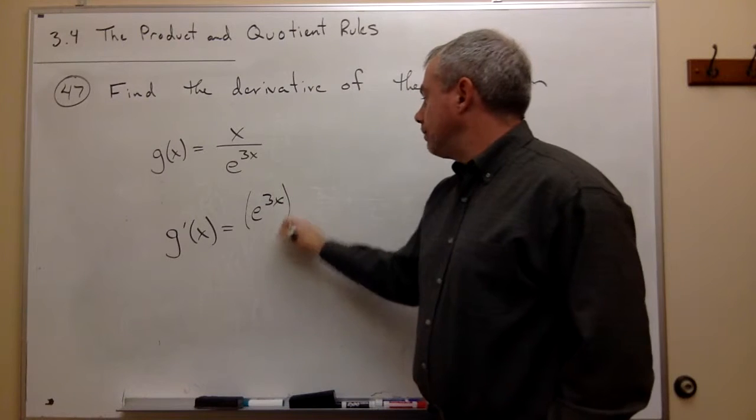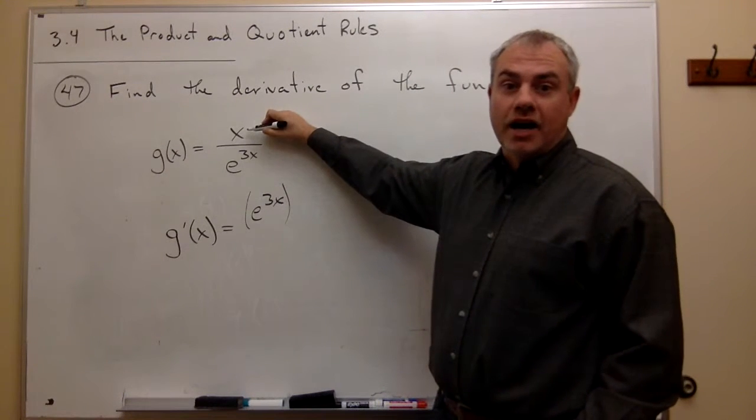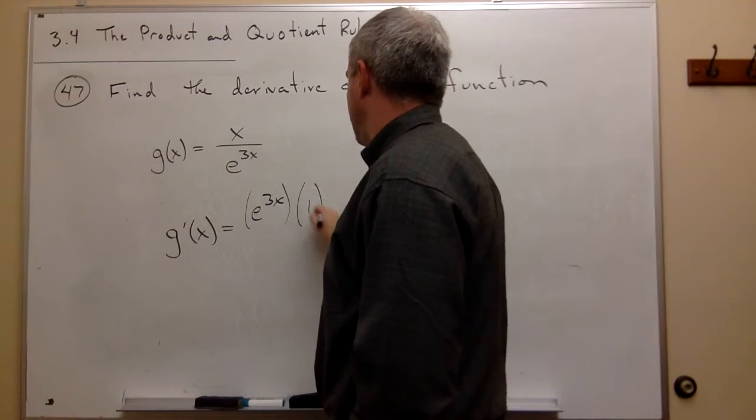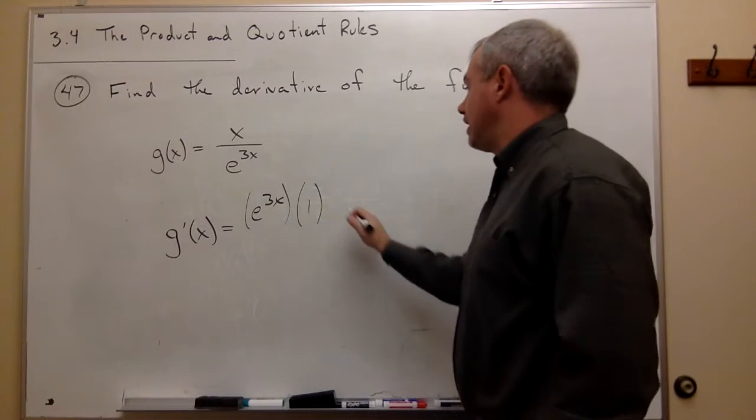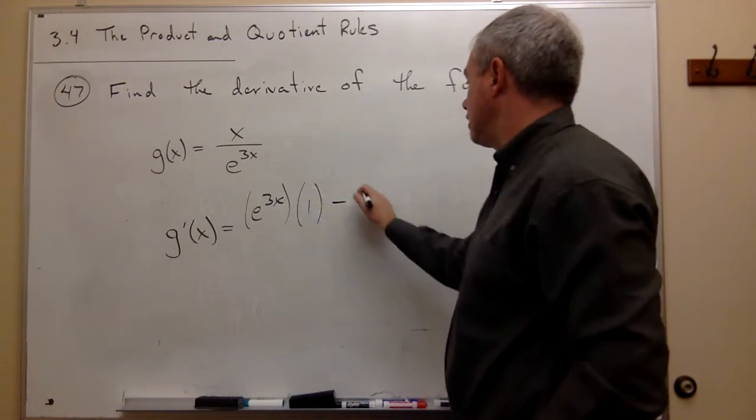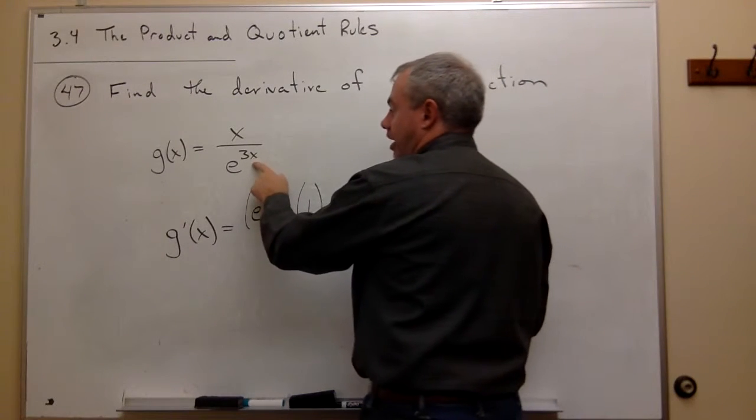Then we multiply that by the derivative of what's on the top, and the derivative of what's on the top is 1, so we multiply it by 1, minus what's on top, which is x, times the derivative of what's on the bottom.